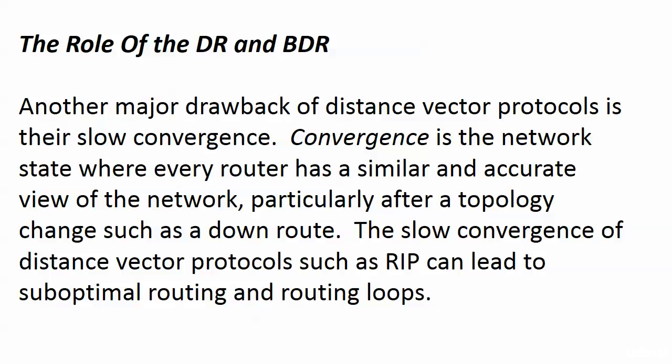It goes back to distance vector protocols and their slow convergence. Convergence is that state of nirvana for our network, where every router has a similar and accurate view of the network. That's particularly important right after a route goes down or a route is added.